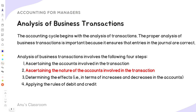After that, we need to ascertain the nature of the accounts involved in the transaction — that is, we need to identify whether each of these accounts is an asset, a liability, or owner's equity for the business. Once we ascertain the nature of the accounts, we can determine the effects — whether the account's value is increasing or decreasing. And then based on that, we can apply the rules of debit and credit.